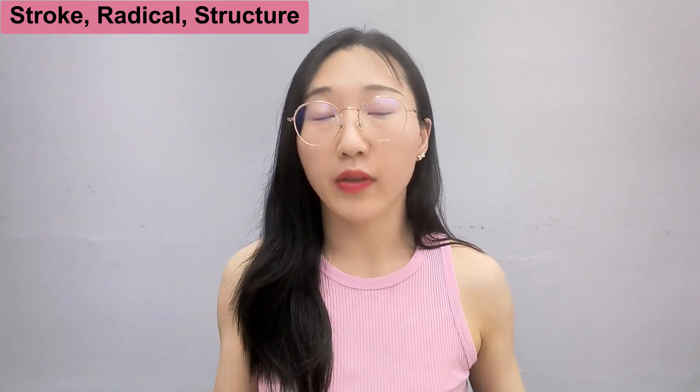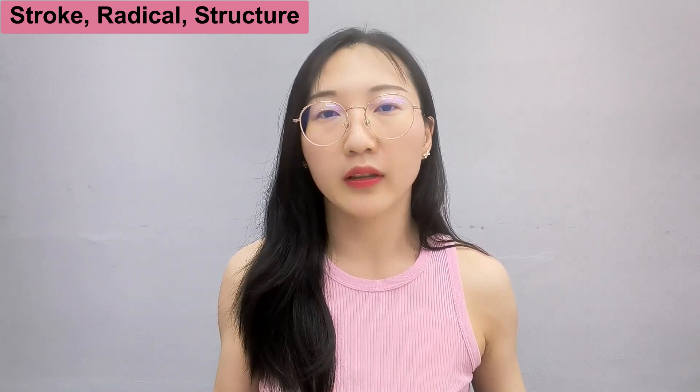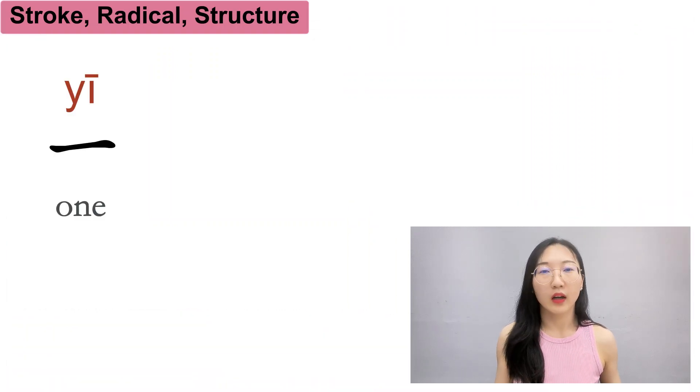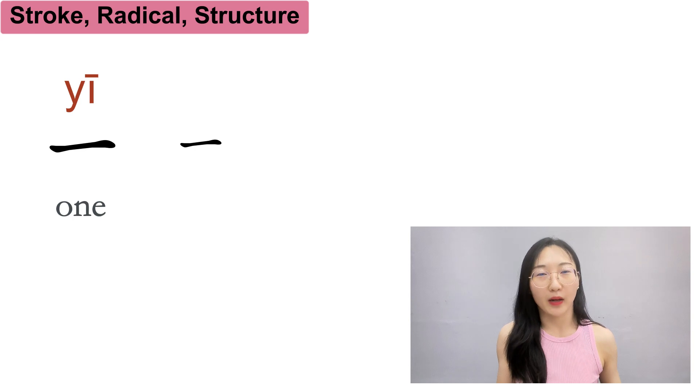All Chinese characters are combinations of these strokes. Some may have only one stroke, like the character 一, which means 'one.' It's just one horizontal stroke, like what it means.